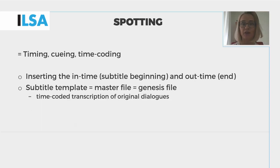Spotting, also known as timing, cueing, or time coding, is the process of deciding when a subtitle appears and disappears. While spotting, a subtitler defines the in time — that is the beginning of a subtitle — and its out time, the end, using time codes. Spotting can be done by the translator from scratch, or by another person who prepares a template, also known as the master file, with time codes and dialogues in the original language of the film, which is then translated by the translator.